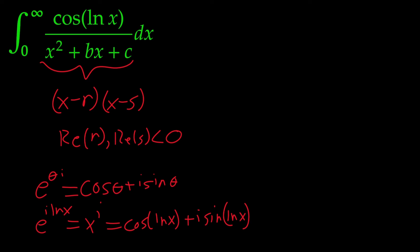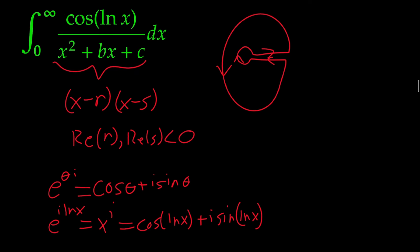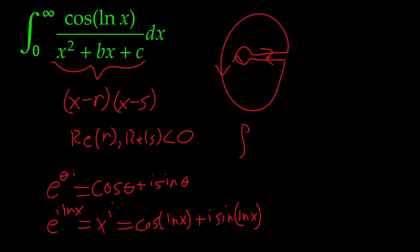Now onto the complex analysis. Looking at our contour, we're going to use the keyhole contour, integrating counterclockwise. The integral we're going to integrate around our contour is x^i over x² + bx + c, again with those restrictions. To find our actual integral I, we take the real part of it.